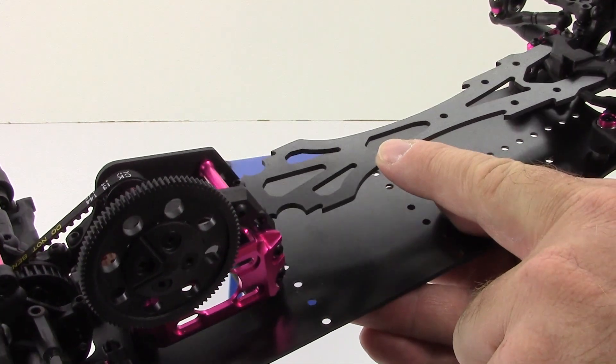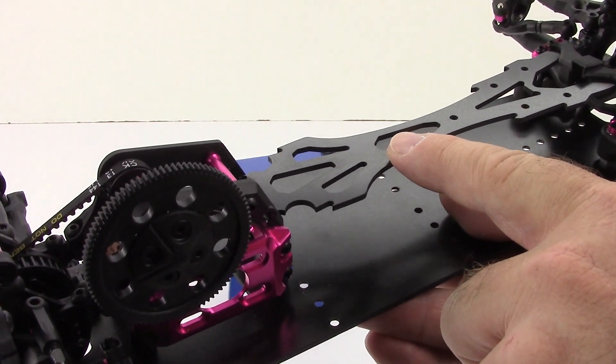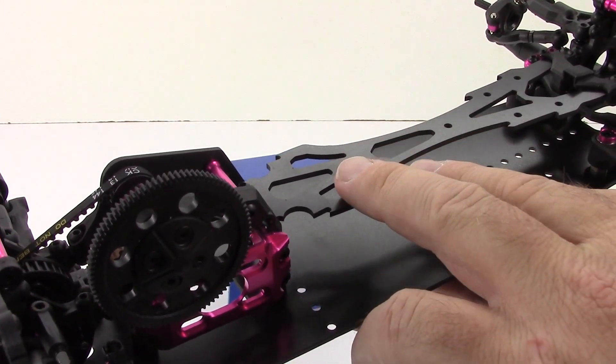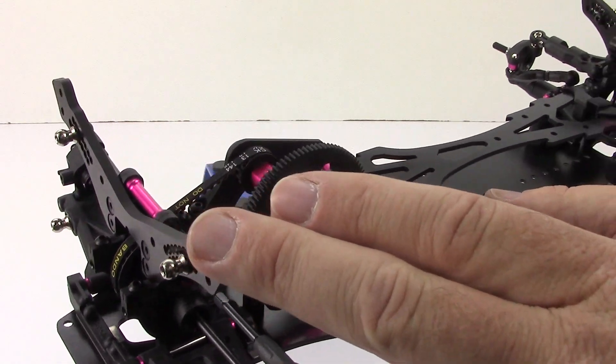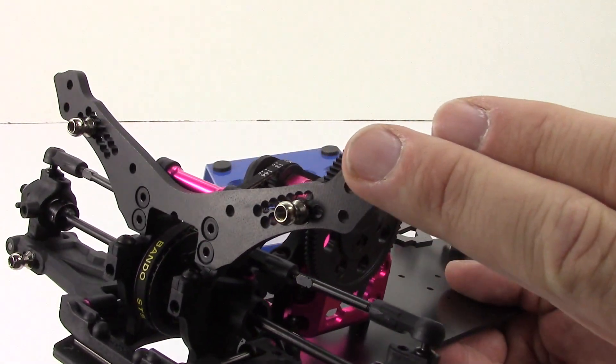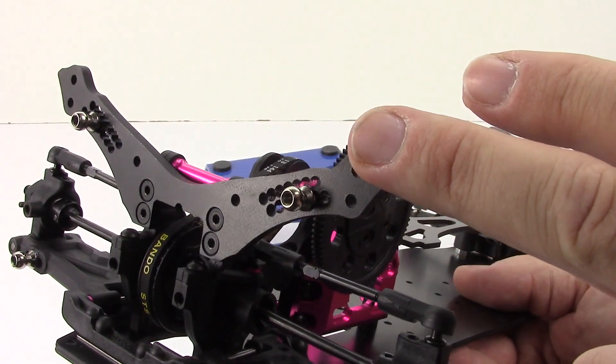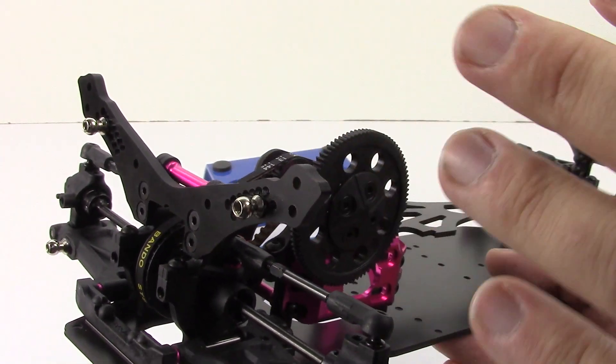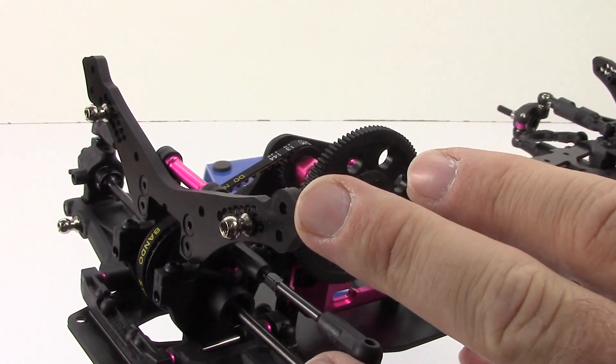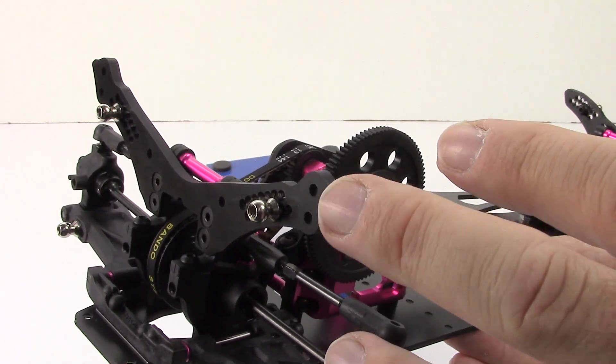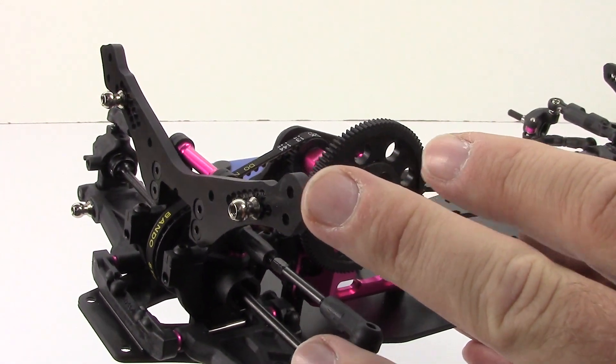You get a similar top plate to the D3, still fiberglass reinforced. You do get an improvement on the shock towers. The shock towers on the D3 were plastic. These are that same fiberglass reinforced or really equivalent to carbon fiber, without the splintering issues that carbon would have.